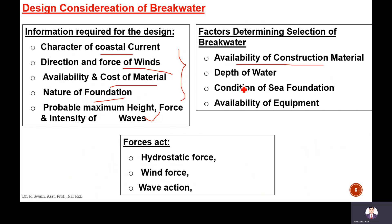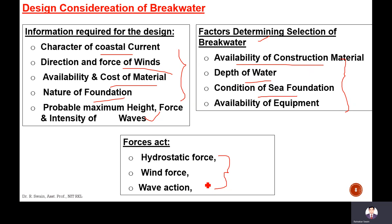The factors include availability of construction material, depth of water, condition of the sea foundation, and availability of equipment. These are necessary for the selection of the breakwater. Depending upon the type of material available in the nearby area, the type of breakwater wall is selected. The major forces considered are hydrostatic, wind, and wave forces. The durability factor is also considered since sea water is salt water.